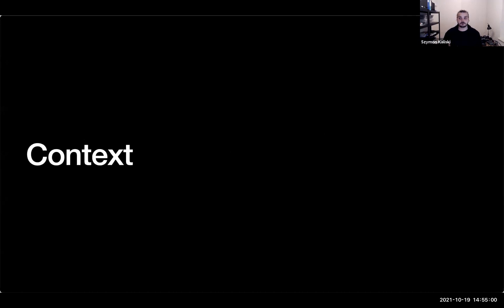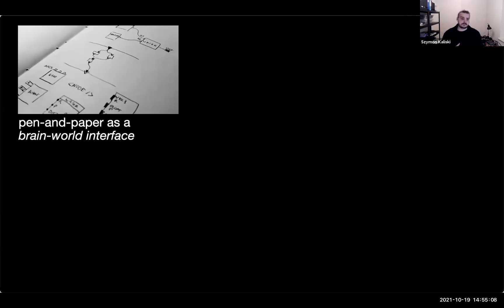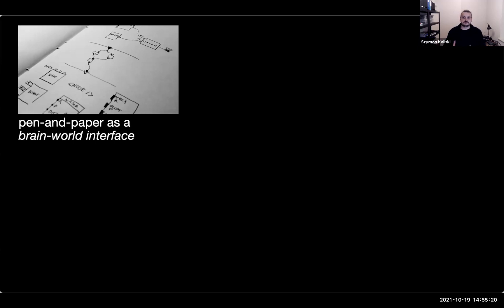Starting with some context for the project, we have a couple of hypotheses that inform this work. The first one is that pen and paper is a great brain-world interface. As a species we have evolved with a lot of dexterity in our hands, and pencil and paper is a great object to think with in Seymour Papert's sense. Using paper allows us to externalize our thoughts and even take a step back and think about our own thinking.